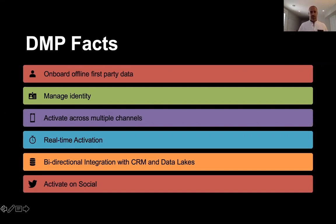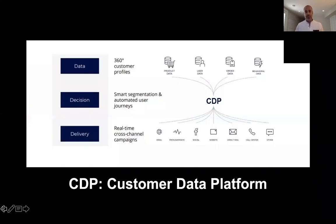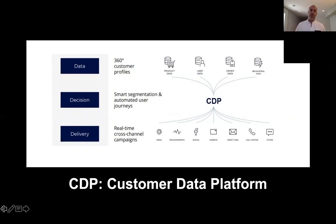Now let's switch topics — enough about DMPs. What is the CDP? CDP stands for Customer Data Platform — another acronym. It has very similar things to a DMP: it allows you to look at the customer profile, the 360-degree view. It allows you to bring in different data — offline, email, behavioral — to create segmentation, some kind of decision orchestration, and finally activation.